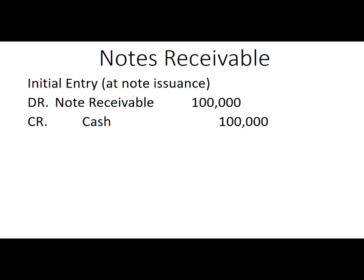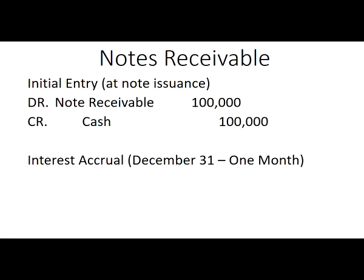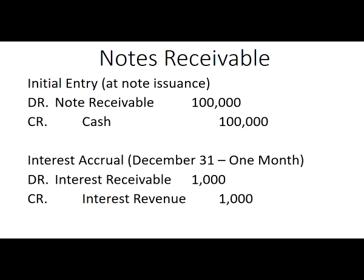When we issue a note, the entry is a debit to Notes Receivable and a credit to Cash — remember, Notes Receivable is an asset account. Now we do an interest accrual. Similar to Unit 1 interest expense accruals, but flipped: instead of interest expense, this is interest revenue and interest receivable. The amount is $1,000 because it's only one month: $100,000 × 12% × 1/12 = $1,000. We're creating an Interest Receivable asset account to hold our earned interest.